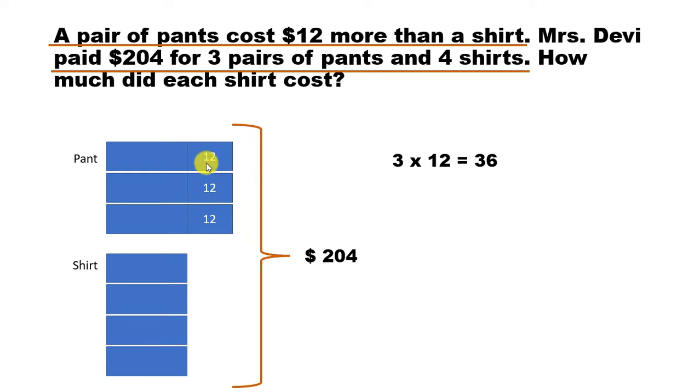So what we can do is take this first. So 3 times 12 is 36. We remove this from 204, then we'll be left with identical units. So 204 minus 36 is 168. So that 168 belongs to all these 1, 2, 3, 4, 5, 6, 7 units.